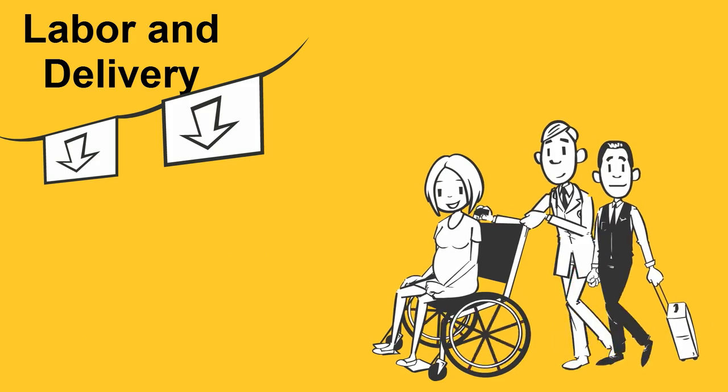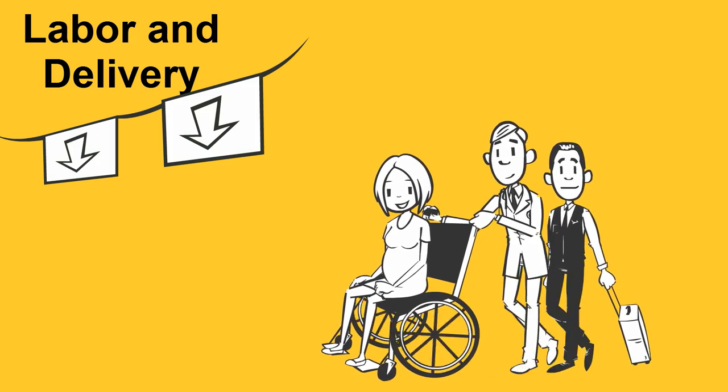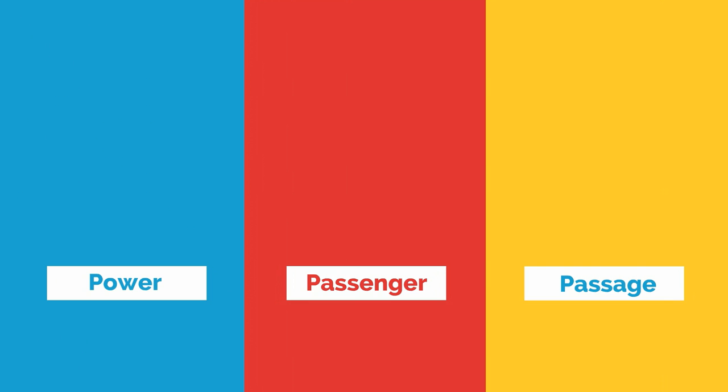Here is Labora entering labor and delivery in active labor. She is dilated to 5 centimeters. Let's start by talking about the three Ps that contribute to a normal labor: the power, the passenger, and the passage.